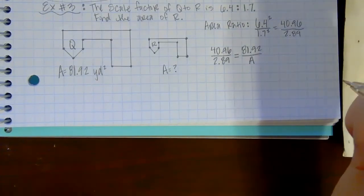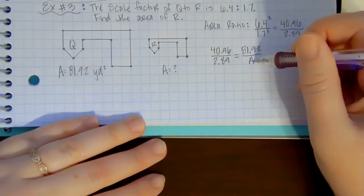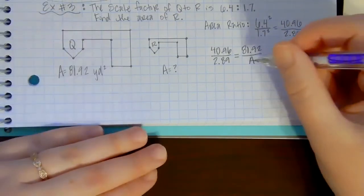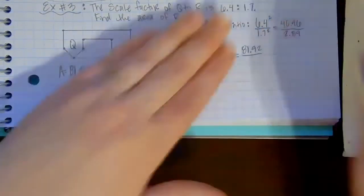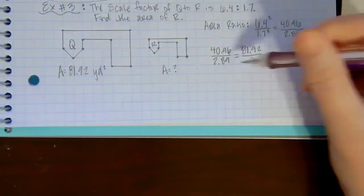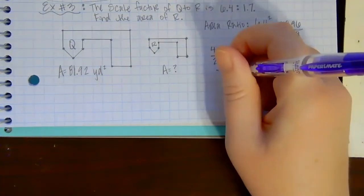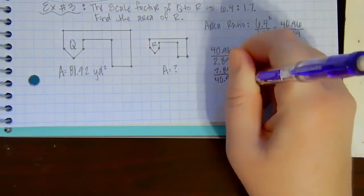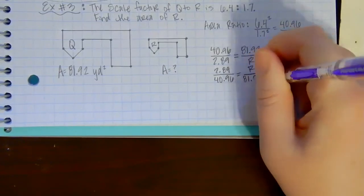Now there's lots of things you can do to solve here. Personally, I would probably make A go on top so that it's a little bit easier. So to make my R go on top, I would probably flip both fractions. That's what I would do, but there's lots of different things that you can do to solve. So I'm going to flip mine. I'm going to make 2.89 over 40.96 and then flip the other side to R over 81.92.